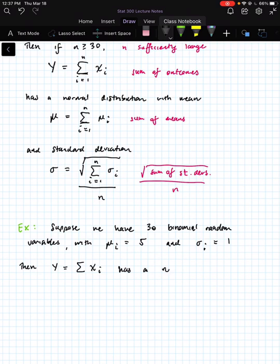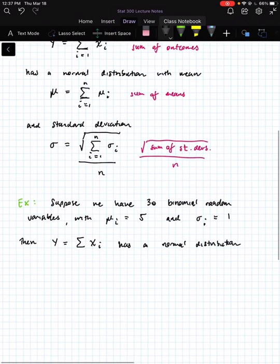Then, the sum variable, so y being the sum of all these x sub i's, has a normal distribution, so it has a bell curve shape, with mean mu being the sum of all these 30 times, so 30 times 5.